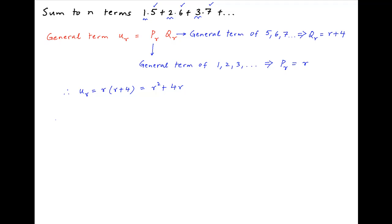Therefore, the sum to n terms of the given series, let's denote it by S_n, is equal to summation U_R, where R goes from 1 to n, is equal to summation R going from 1 to n of R square plus 4R. And this is equal to summation R square plus 4 times summation R, where R goes from 1 to n.